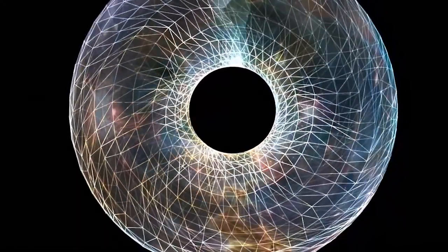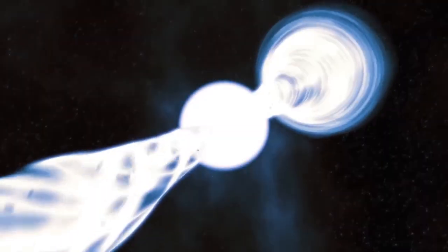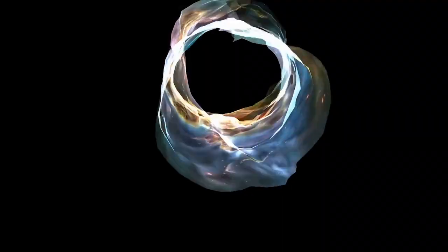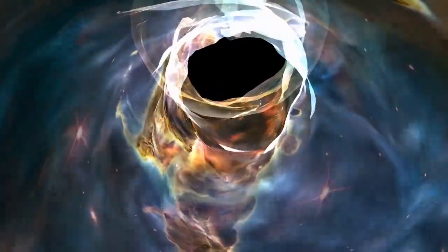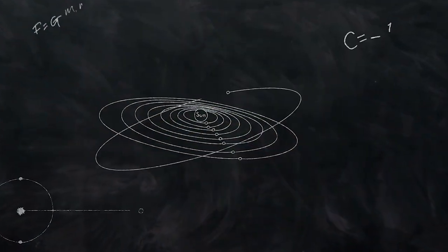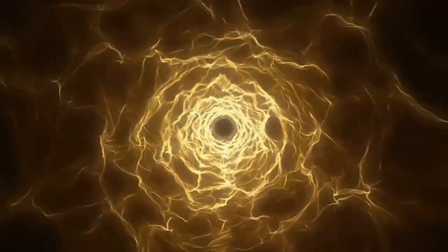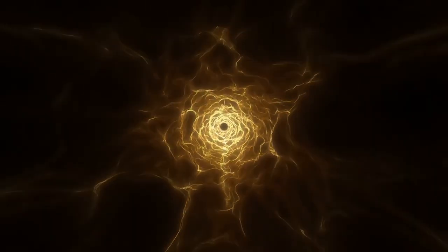This curvature in spacetime is what causes planets to orbit around stars and moons to orbit around planets. In the case of a wormhole, the curvature of spacetime is so extreme that it creates a tunnel or shortcut between two distant points in spacetime. The mouth of a wormhole can be thought of as a funnel that leads to a tunnel through spacetime. To enter the wormhole, one must pass through the mouth and travel through the tunnel to reach the other end.